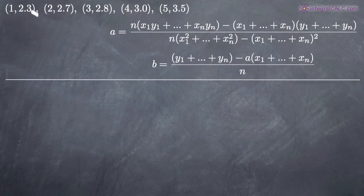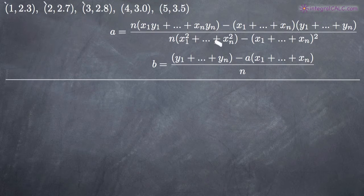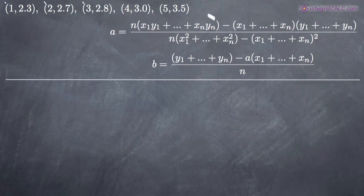The x-coordinate represents the year — year one, year two, year three, etc. And 2.3, 2.7, 2.8 represent the company's revenue in billions of dollars. What we've been asked to do is find the least squares line that models this data and then use that formula to predict the amount of revenue the company will generate in the sixth year.